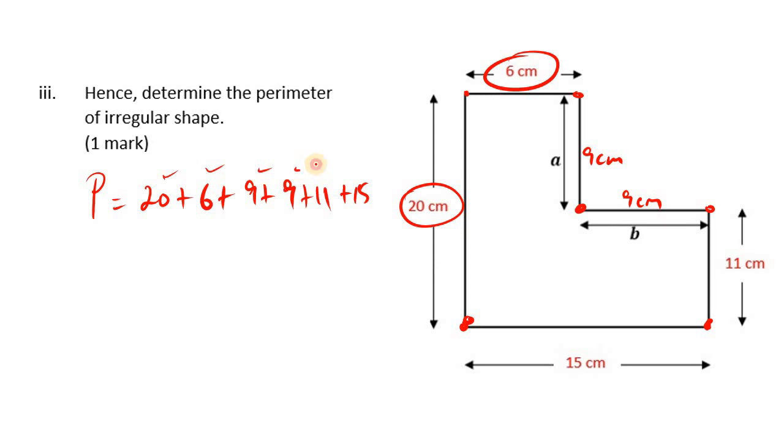Let's double check. 1, 2, 3, 4, 5, 6. So easy to make sure the figure, right? 20 plus 6, that's 26. Plus 9, that's 35. Plus 9, that's 44. Plus 11, that's 55. Plus 15, that's 70 centimeters.